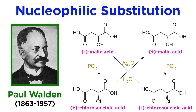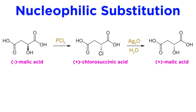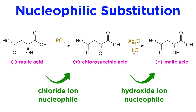At the time, this was a breakthrough discovery. The optical activity of a compound had been reversed via two chemical reactions, which meant the chiral center was inverted. We now understand that this happened because he was performing nucleophilic substitution reactions, where a nucleophile — in these cases either a chloride ion or a hydroxide ion — was replacing some group on the molecule.